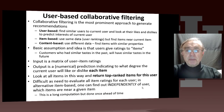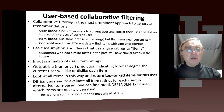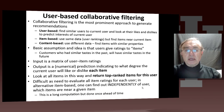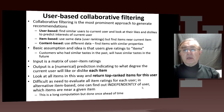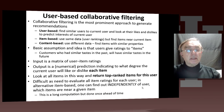In user-based collaborative filtering, we're choosing one of the three key methods. In user-based, you take a given user, find similar users to that user, and look at the likes and dislikes of the other users to find the interest of the current user.